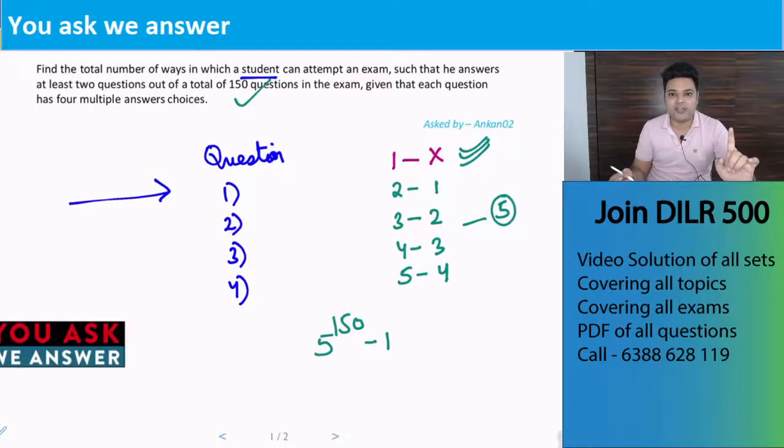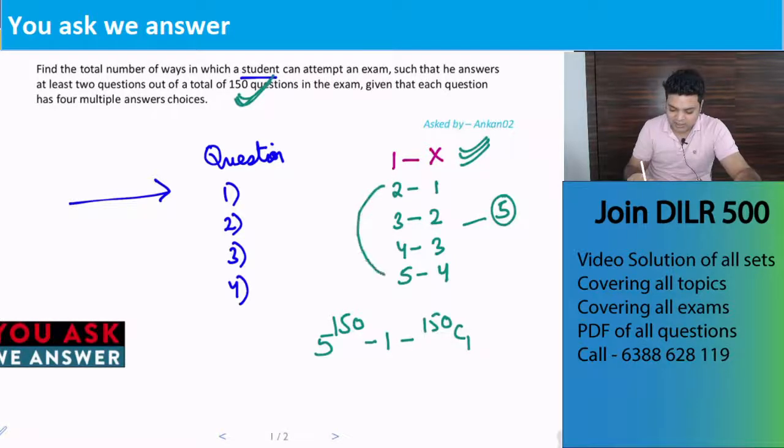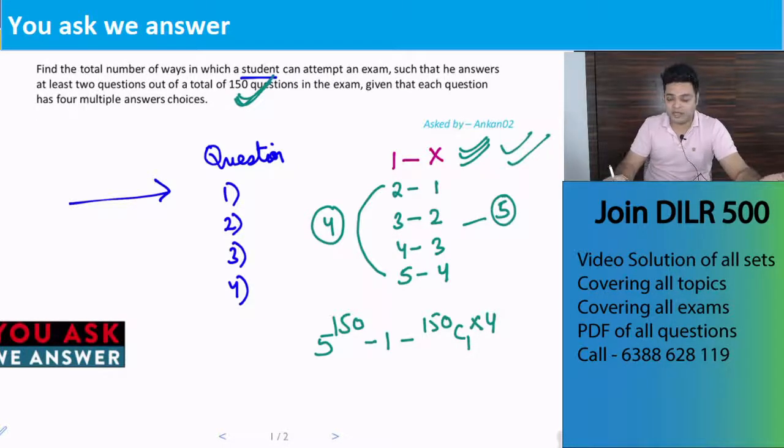Second case, what will it be? When he attempted only one question. So how many ways to select one question? Out of 150 questions that he attempted - 150 C1. This way we will select that question. Now if he attempted that question, in how many ways can he attempt it? He can attempt it in 4 ways using these 4 options. So we will multiply this by 4. All other questions he will do in only one way, which is unattempted.